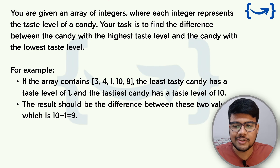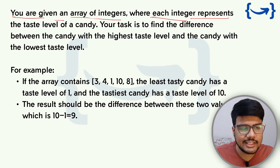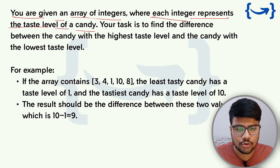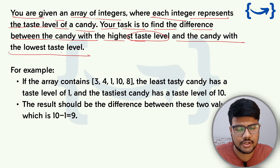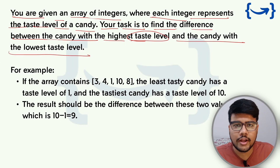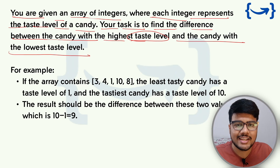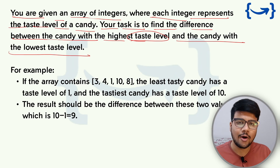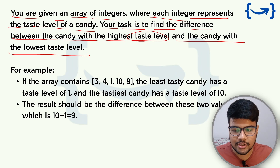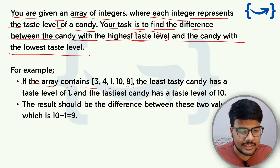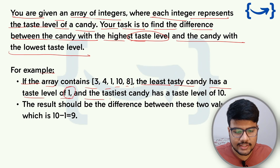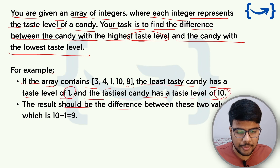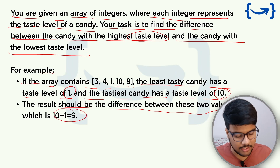Moving forward with the first problem: you are given an array of integers where each integer represents the taste level of candies. Your task is to find the difference between the candy with the highest taste level and the candy with the lowest taste level. For example, if the array contains 3, 4, 1, 10, 8, the least tasty candy has taste level 1 and the tastiest has taste level 10. The result should be 10 minus 1, which is 9.